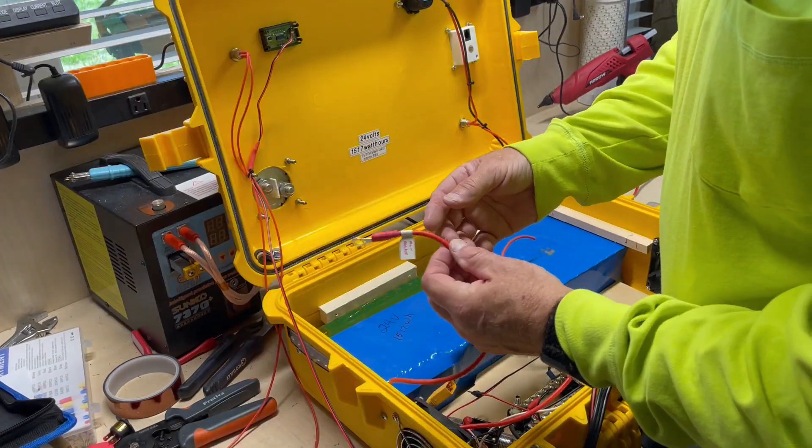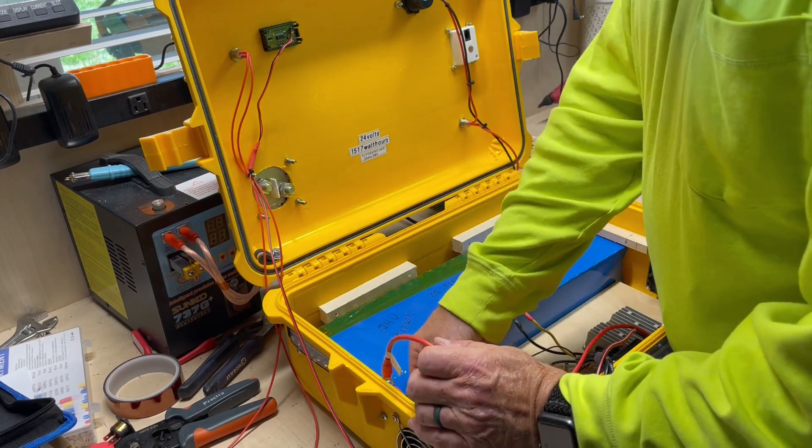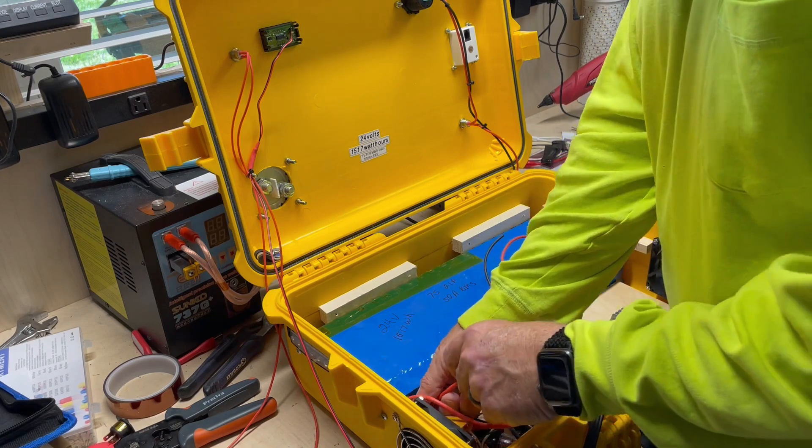Then I start running my wires. I've marked these already, the main breaker. So this one will slide through here.